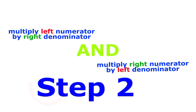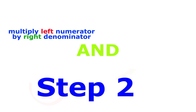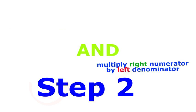Now for step two. This is a two-part step. You need to multiply the left numerator by the right denominator, then multiply the right numerator by the left denominator.